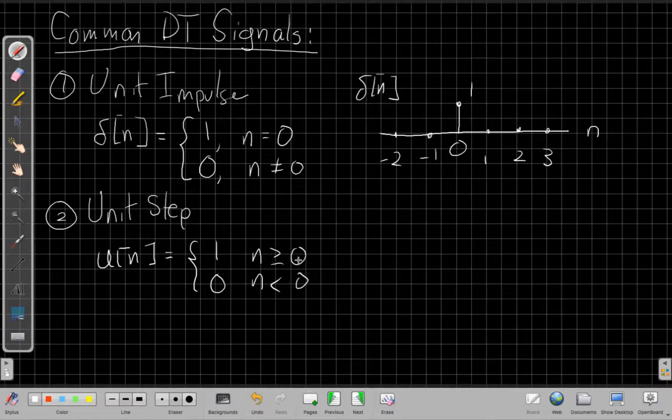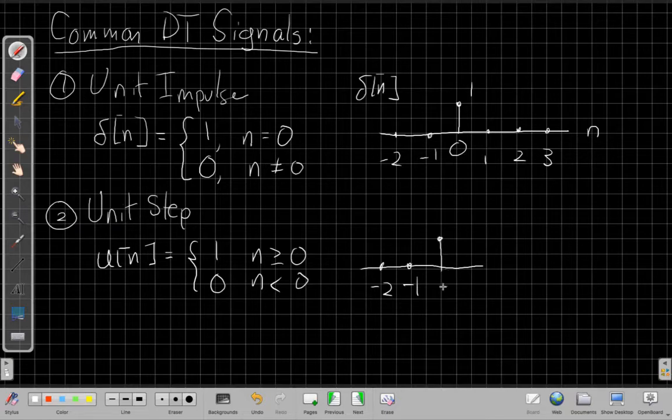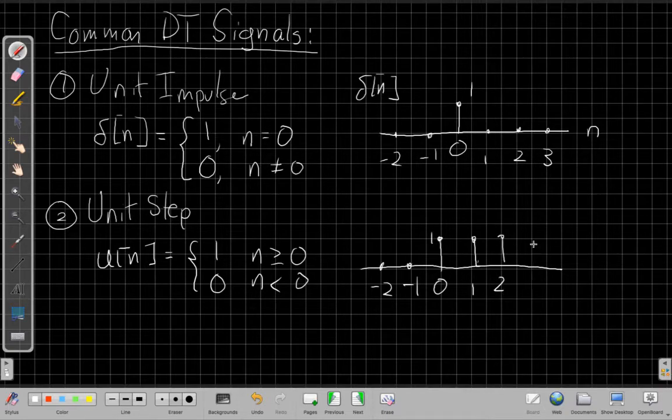So for 0 and positive time, or for negative time, maybe a better way to say this, for negative time it's going to be 0. And then starting at 0, it takes a step up, just like the first step on a staircase, but it doesn't keep going up. So it's just a single step. And for all positive time, it still has height 1. Okay, so this is the unit step signal.